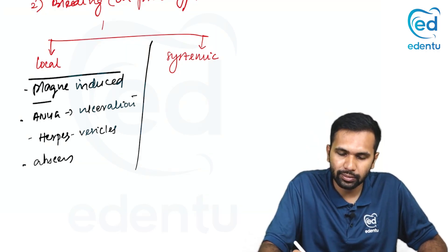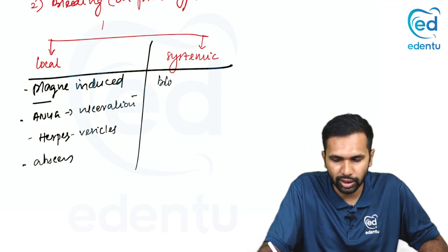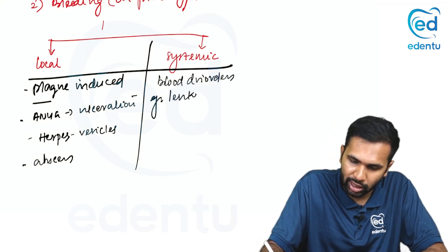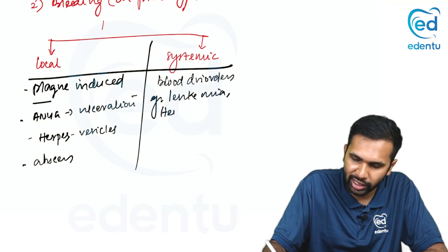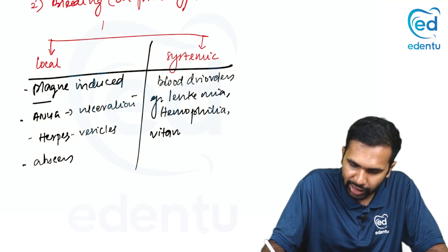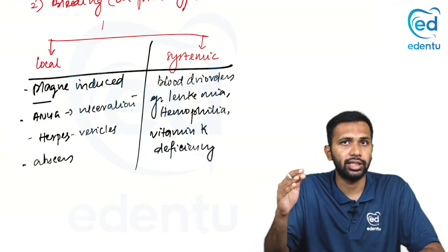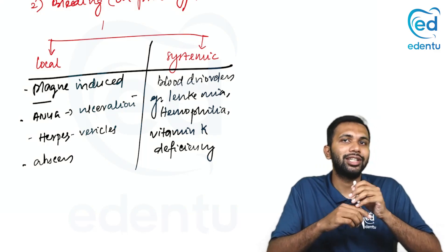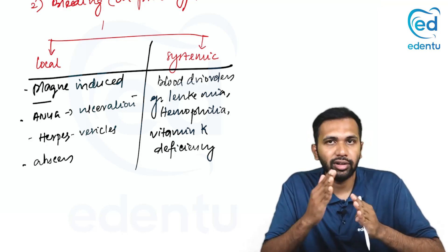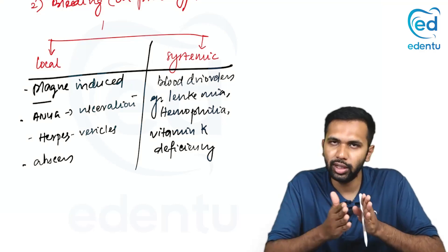The systemic causes for bleeding are most commonly blood disorders — for example, leukemia, hemophilia, and vitamin K deficiency. So bleeding does not necessarily mean the patient has gingivitis. Bleeding has both local and systemic causes. Once you rule out the systemic causes, you can focus on the local causes.